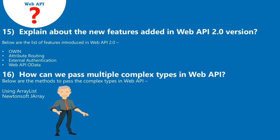Question 16: How can we pass multiple complex types in Web API? Below are the methods to pass complex types in Web API: using ArrayList, and using Newtonsoft JArray.